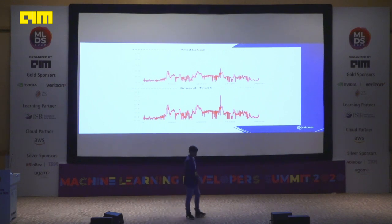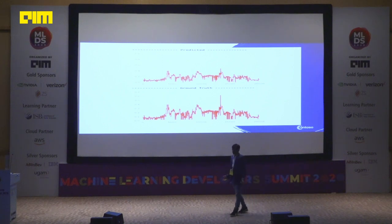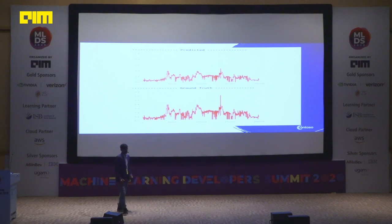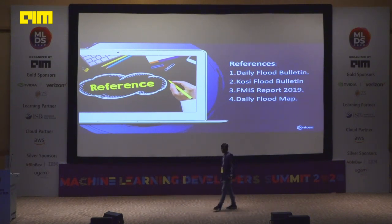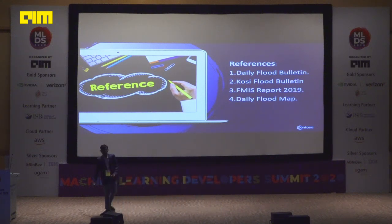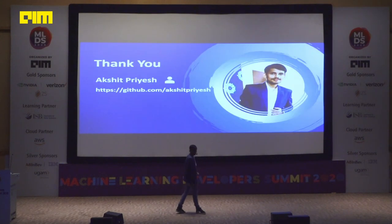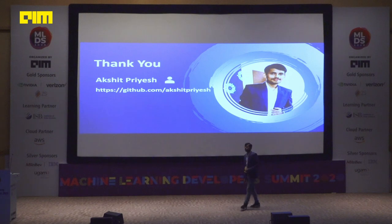Looking at the results — the upper part is the predicted result and the lower part is the ground truth. As we go from the 15,000 to 20,000 data range, we can find that when there is a high flood, our model is not behaving well. Our model performs better for low-lying and low-flood scenarios. We need to add more features to make the model more accurate. References used include daily flood bulletins, Kosi flood bulletins, daily flood maps, and Google APIs.